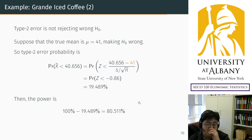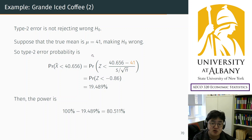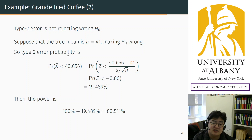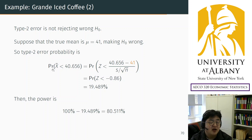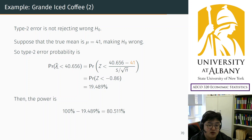Now, Type 2 error is not as straightforward as Type 1 error. I will assume that the actual temperature is slightly higher than it should be — 41 degrees. So your belief is wrong. Type 2 error probability is the probability that you fail to detect the difference. If the temperature is actually too high but you think it is low enough, that is a Type 2 error. That happens when the sample average happens to be lower than the critical value.